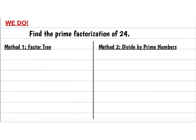We are going to try the prime factorization for the number 24. We're going to break that down into prime numbers, and we have two methods, so I want you to write down both methods, and then you get to choose which one makes more sense to you. So for the factor tree, we start with 24 at the top, and now we are going to split this into two numbers that multiply to make 24. I know 2 and 12 can multiply together to make 24. I'm going to ask myself, is 2 a prime number? And it is, so I'm going to circle it — that means that one is done.